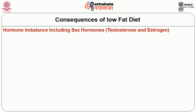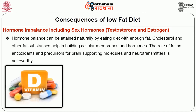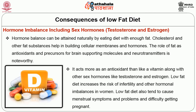Hormone imbalance, including sex hormones, testosterone and estrogen, can result from low fat diets. Hormone balance can be attained naturally by eating a diet with enough fat, as cholesterol and other fat substances help in building cellular membranes and hormones. Fat acts as an antioxidant and precursor for brain-supporting molecules and neurotransmitters. Vitamin D acts more as an antioxidant than a vitamin, along with other sex hormones. Low fat diet increases the risk of infertility, hormonal imbalances, menstrual symptoms and difficulty getting pregnant in women.